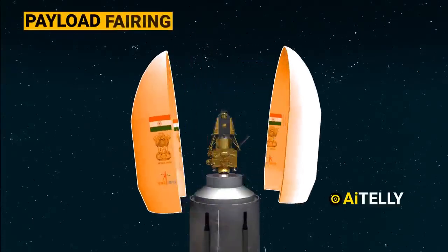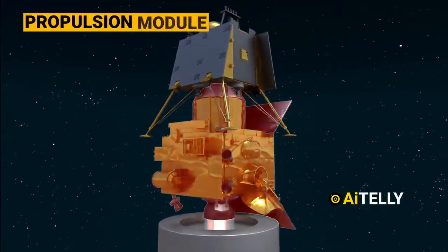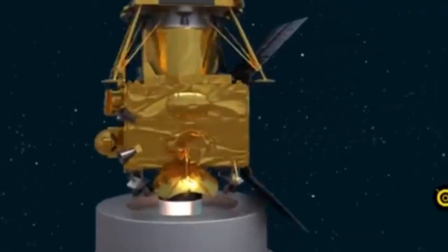It consists of the payload fairing which can carry the Chandrayaan-3 spacecraft. Chandrayaan-3 again consists of an indigenous propulsion module, a lander module, and a rover.